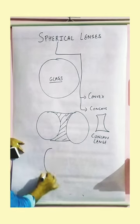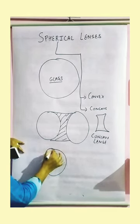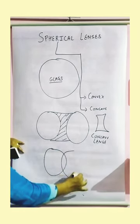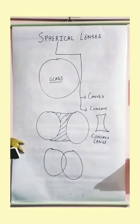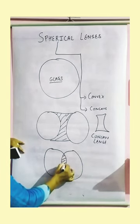Now convex lens, again the two spherical glass body we have. And these two spherical glass body again when I am going to combine, did you observe the shape?